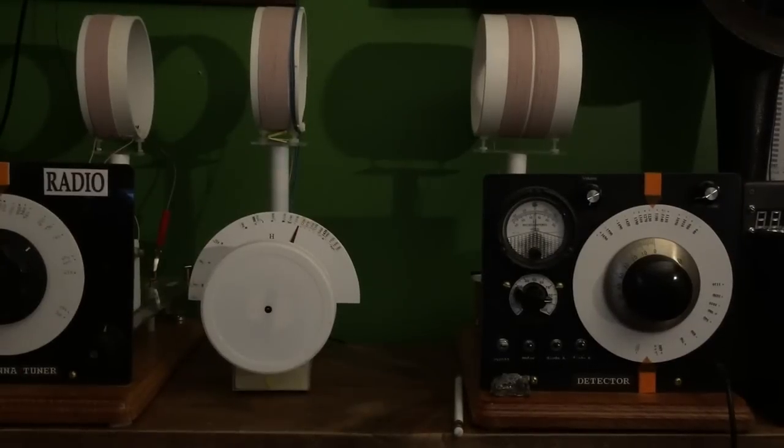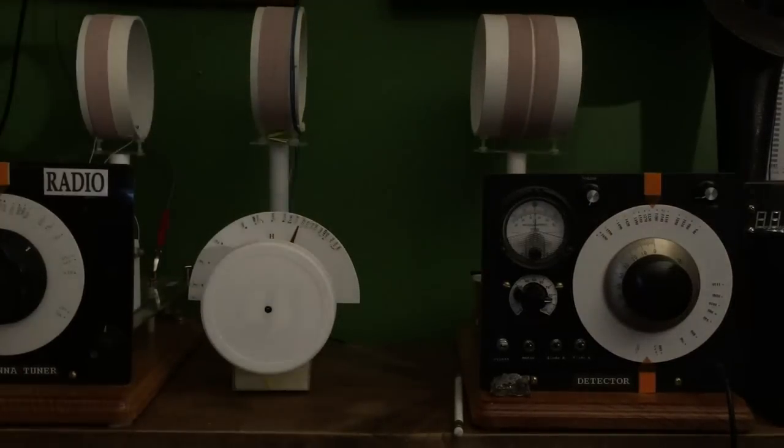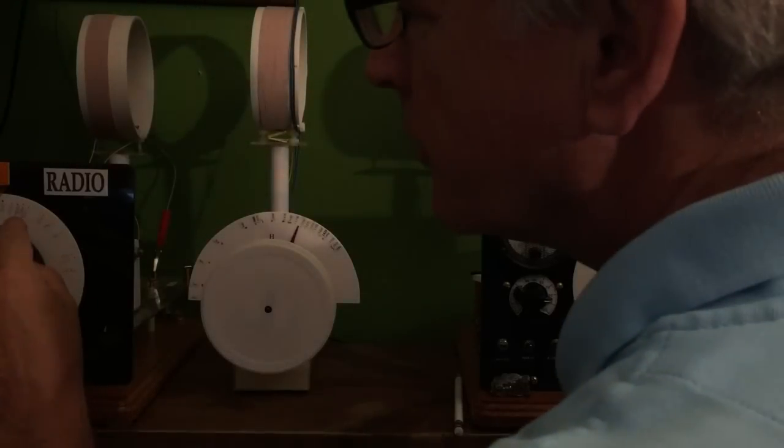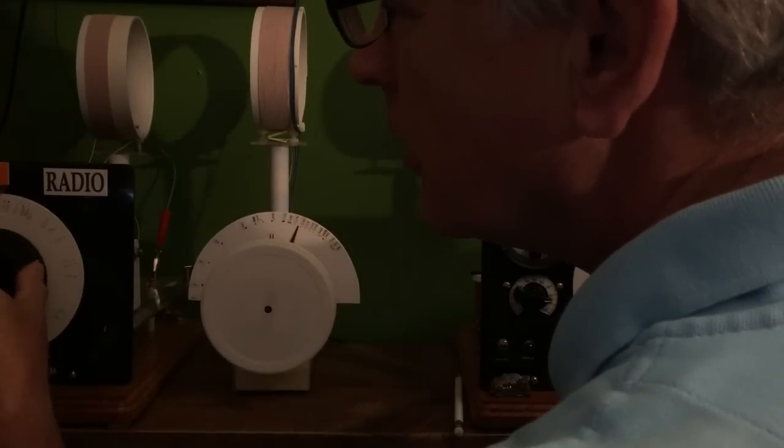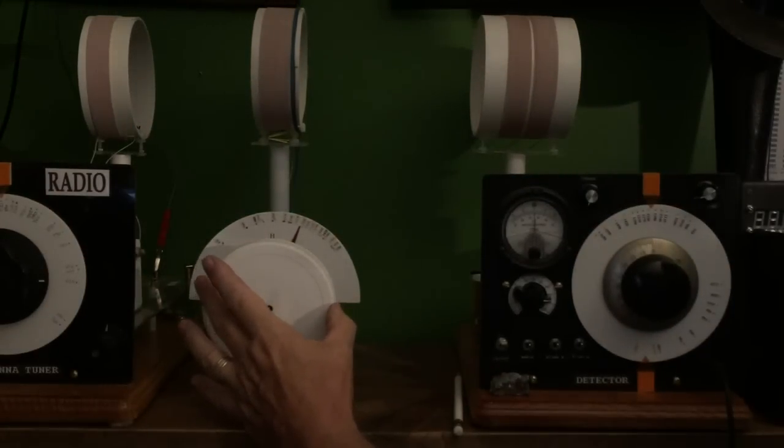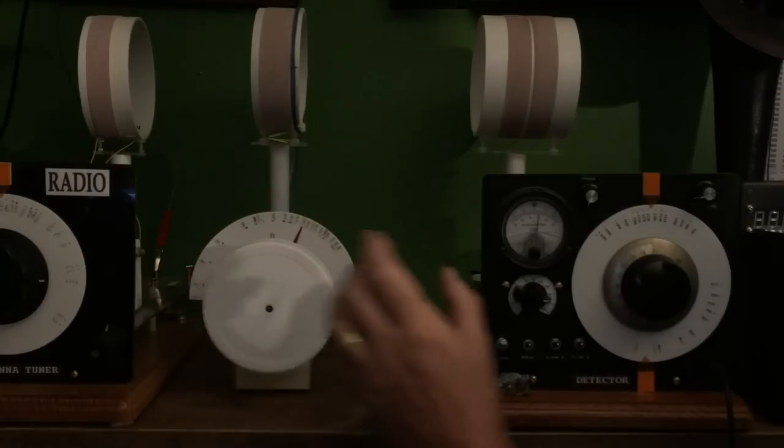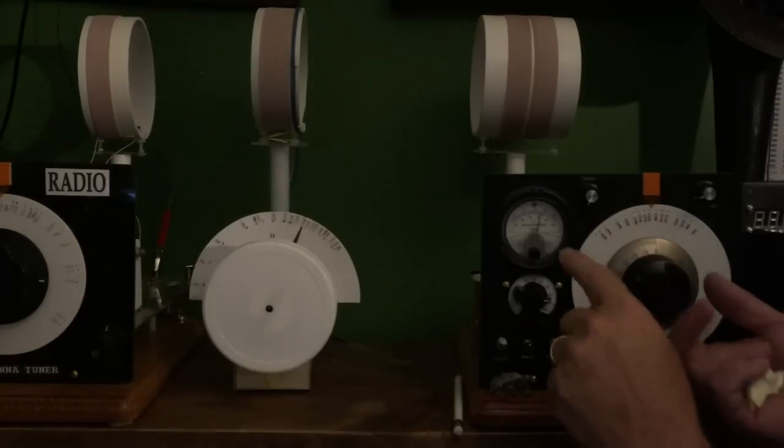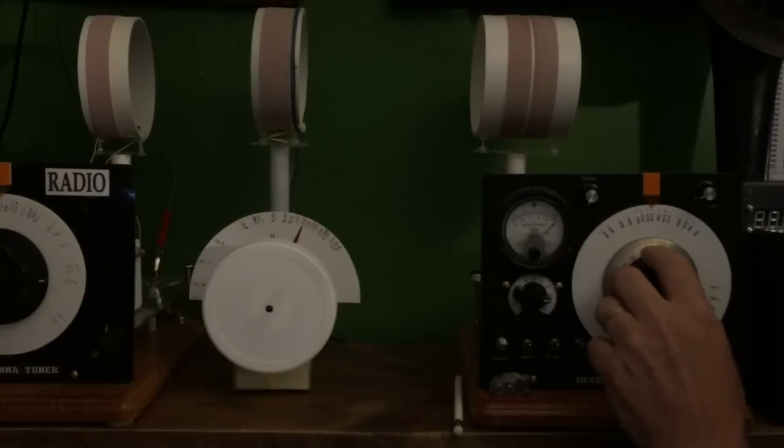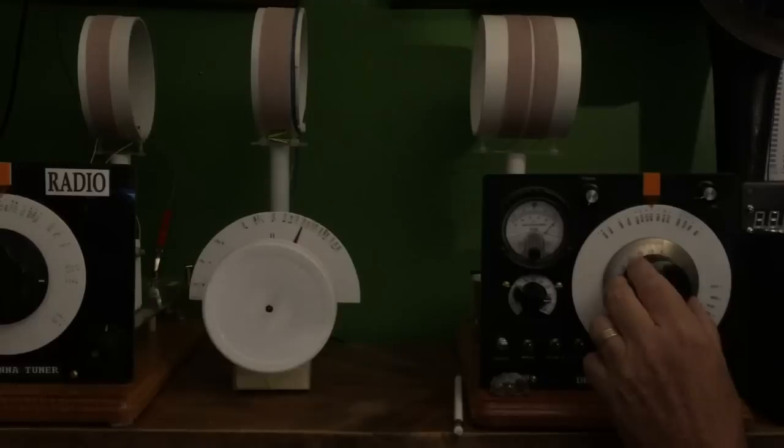Okay, so let's tune in a station. We'll start with the antenna tuner. We'll tune it up to 1230. We'll take the bandpass filter. Tune it up to 1230. Then we'll take the detector. Tune it up to 1230. Notice the needle. As we get it tuned in to a frequency.